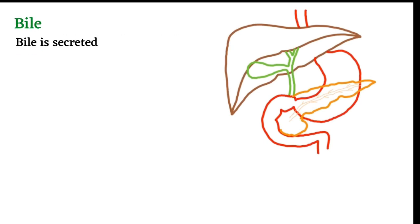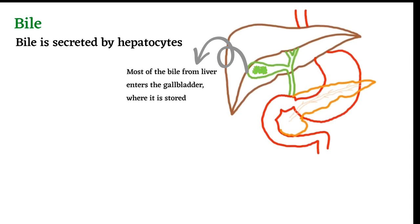Bile is secreted by hepatocytes. When required, it will be released into the intestine, but most of the bile from the liver enters the gallbladder where it is stored.